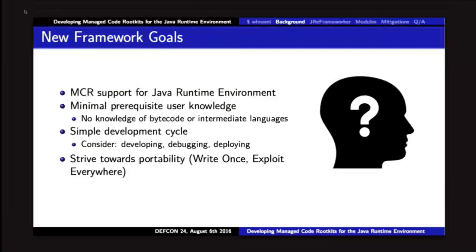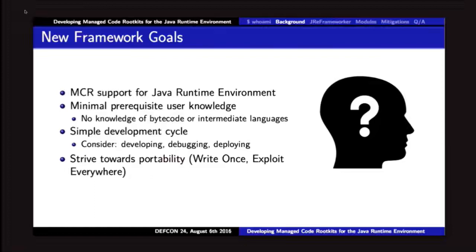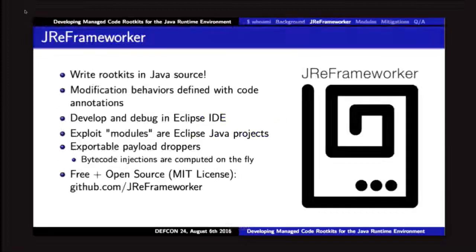We want a natural development environment. If you've written a Java program, you've probably used Eclipse. Whether or not you like it, it's familiar — you know how to debug your program, how to deploy it. If we can write something from high-level source, we can strive towards portability without worrying about low-level runtime details. I called this tool JReFrameworker — a riff on Erez Metula's ReFrameworker, with 'JRE' up front, which I liked. It's an Eclipse plugin so you can work right inside Eclipse, with the ability to export and drop the payload on the victim machine.